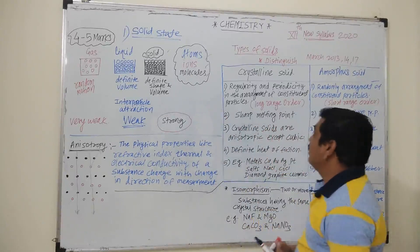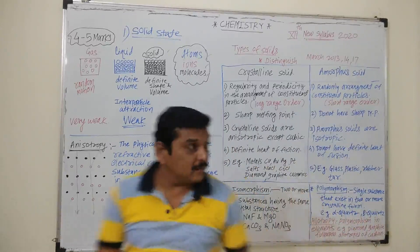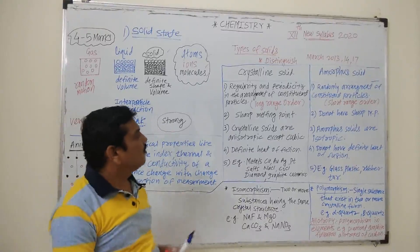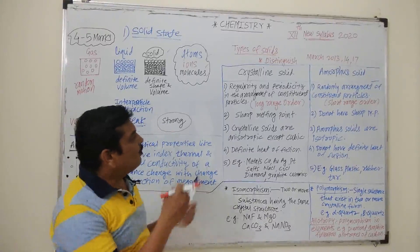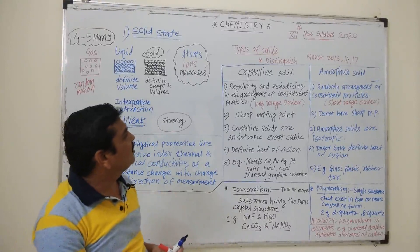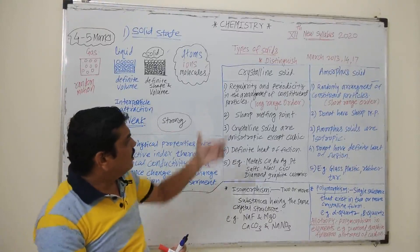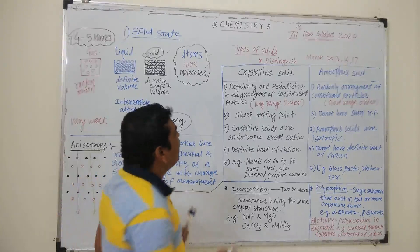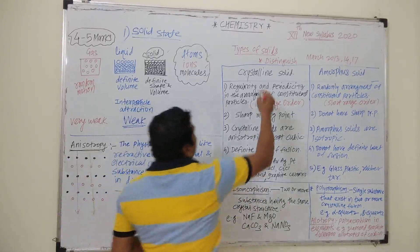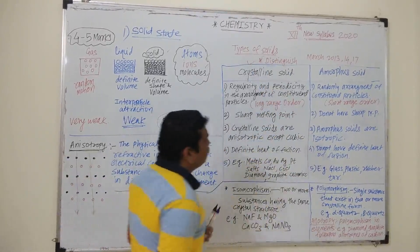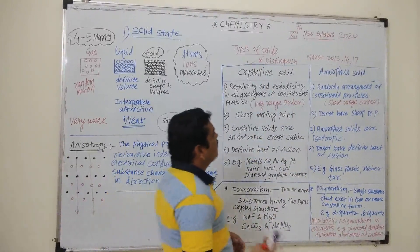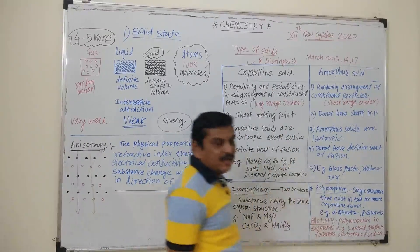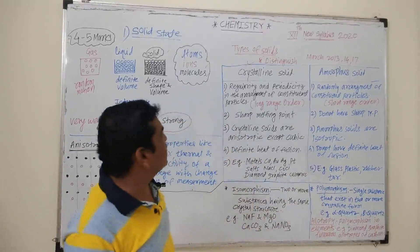In solids, there are two types: crystalline solids and amorphous solids. A question on this point has been asked three times in board exams — March 2013, March 2014, and 2017.